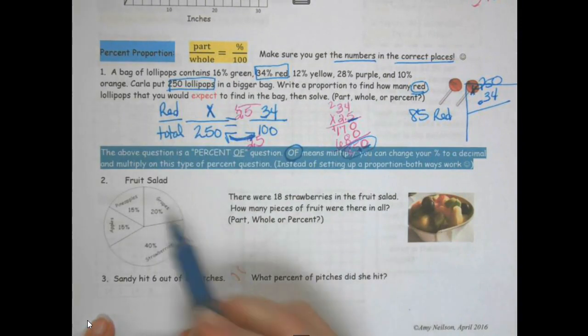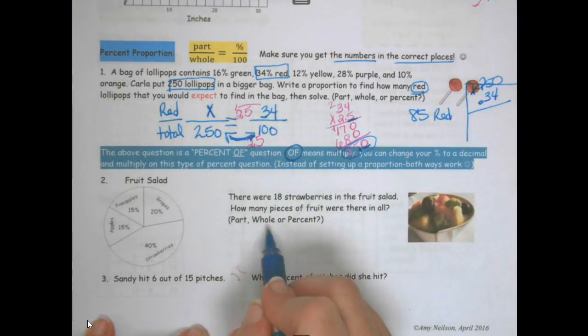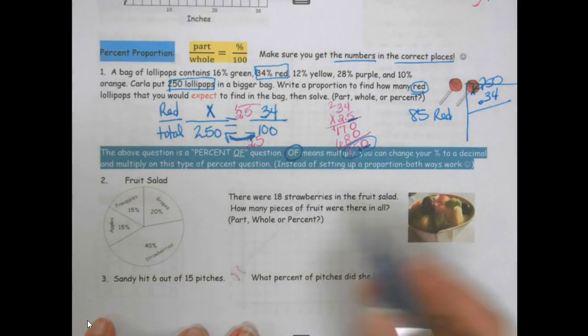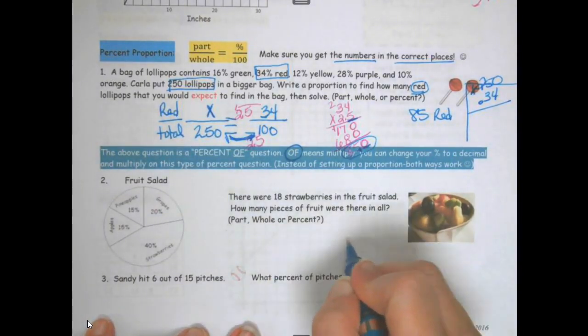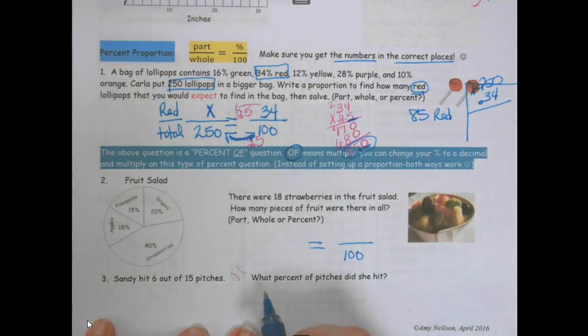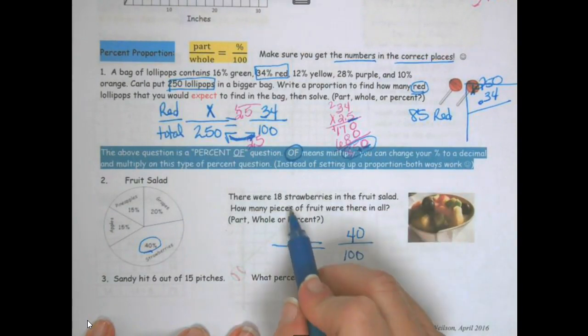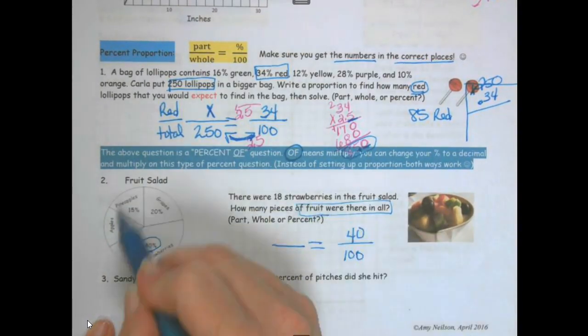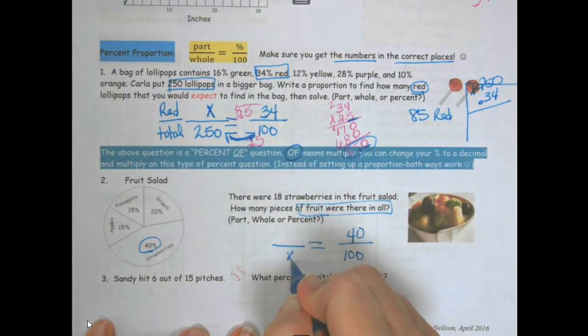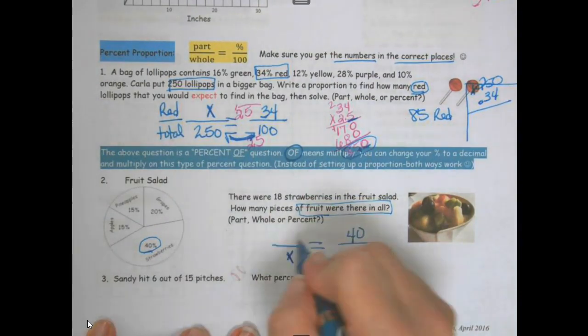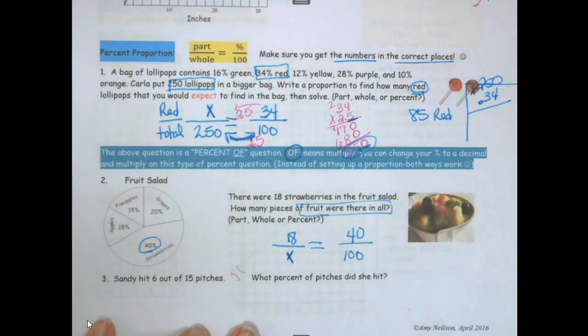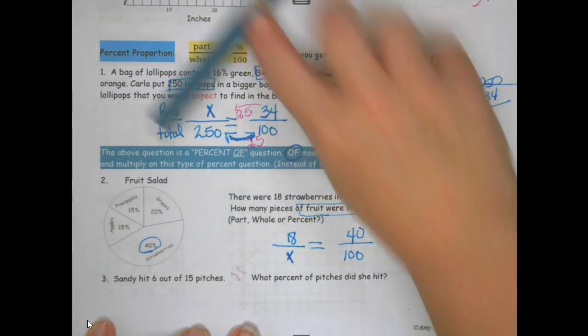Number 2. There were 18 strawberries in the fruit salad. How many pieces of fruit were there in all? Part, whole, or percent? So what are they asking? There were 18 strawberries so let's fill in our blanks. I know that is 100. Do we know the percent of strawberries? Yes it's right here so I'm going to fill in my blank percent. How many pieces of fruit in all? Do we know how many fruit in all? No, so this is what we are looking for. Do we know how many strawberries? Yes, 18.